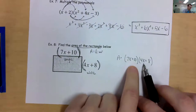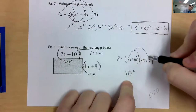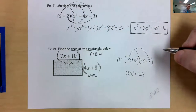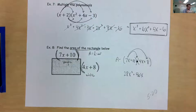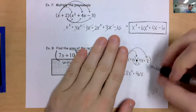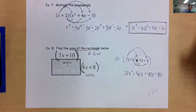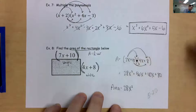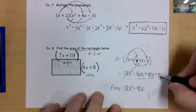I need to multiply the entire length, 7x plus 10, by the entire width, 4x plus 8. So to find the area, I take (7x + 10) times (4x + 8). 7x times 4x is 28x squared. 7x times 8 is 56x. Then distributing the 10: 10 times 4x is 40x, and 10 times 8 is 80. Adding like terms: my area equals 28x squared plus 96x plus 80.